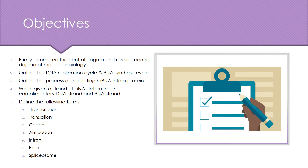Outline the DNA replication cycle and RNA synthesis cycle. 3. Outline the process of translating mRNA into a protein. 4. When given a strand of DNA, determine the complementary DNA strand and RNA strand. 5. Define the following terms: transcription, translation, codon, anticodon, intron, exon, and spliceosome.